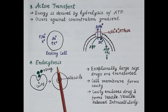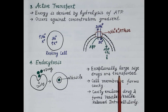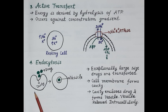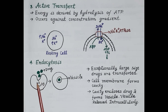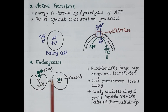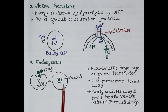The fourth transport process is endocytosis. Exceptionally large-size drugs are transported by this process. The cell membrane forms a cavity which encloses the drug; this cavity then forms a vesicle. The vesicle is released intracellularly, transporting the drug into the cytoplasm.